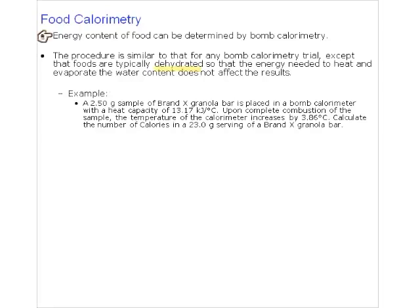They perform bomb calorimetry: they take a sample of the cereal, weigh it, put it in a bomb calorimeter, ignite it, burn it, and figure out how much energy is released. One thing to watch out for: if you take a banana or orange and want to figure out its food energy, it's like burning wet firewood. All that water has to vaporize and remove itself before the food can properly combust.